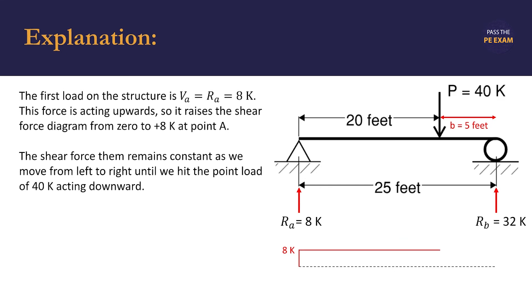The shear force then remains constant as we move from left to right until we hit the point load of 40 kips acting downward, opposite the force at point A. Accordingly, we draw a horizontal line with a slope of zero until we reach this location.